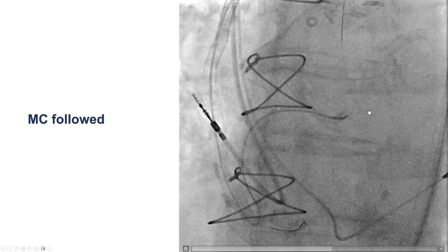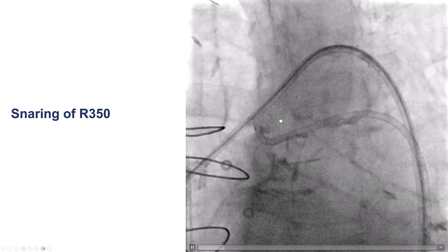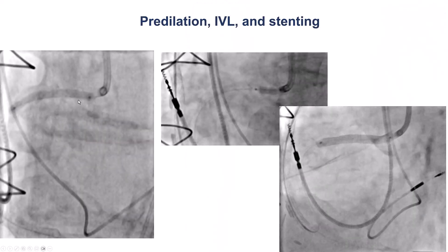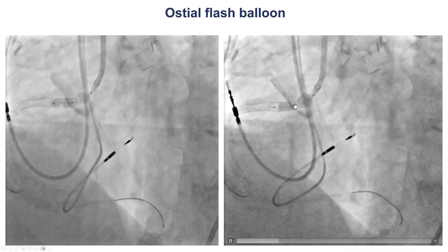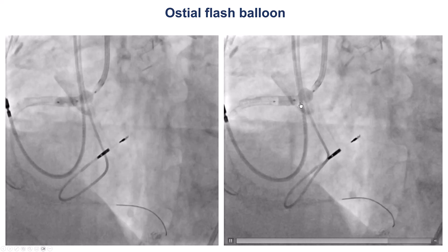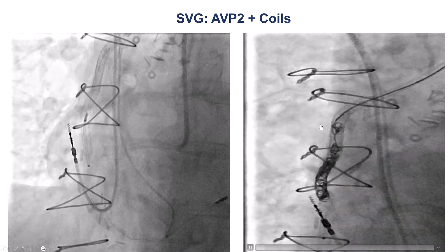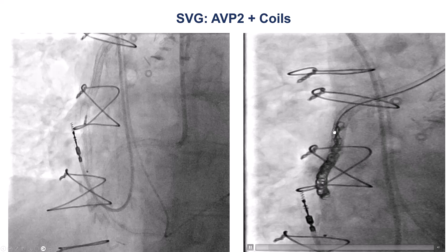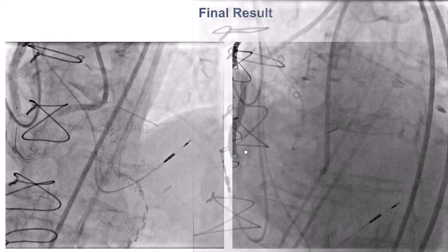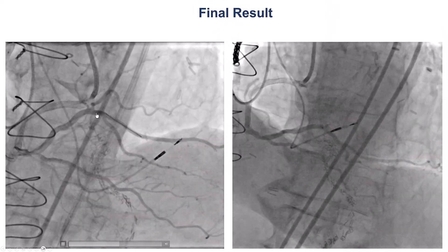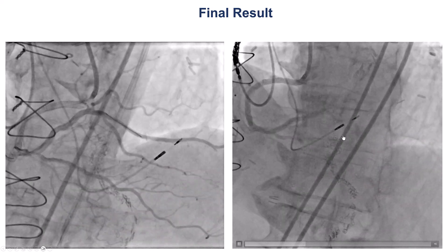We advanced the retrograde Corsair into the aorta, then snared an R350 guide wire. After that, we predilated and stented, using an osteo-flush balloon to expand the stent well around the ostium of the right coronary artery. Because there was brisk competitive flow from the saphenous vein graft, we placed coils as well as an Amplatzer Vascular Plug II, which successfully occluded the saphenous vein graft. The final result showed TIMI-3 grade flow from the native right coronary artery all the way to the distal RCA as well as the right posterolateral branch.